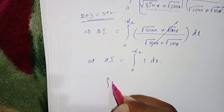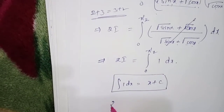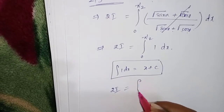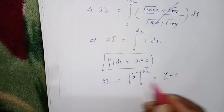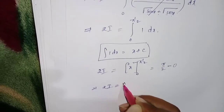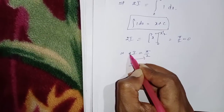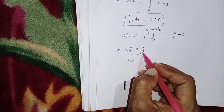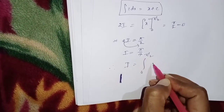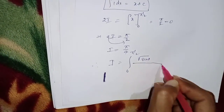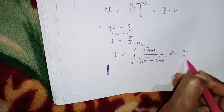We know that ∫1 dx = x + c. For this definite integral, 2I = [x]₀^(π/2). Substituting the upper limit π/2 and lower limit 0: 2I = π/2 − 0 = π/2. Therefore I = π/4. So ∫₀^(π/2) √sinx / (√sinx + √cosx) dx = π/4 is the answer.